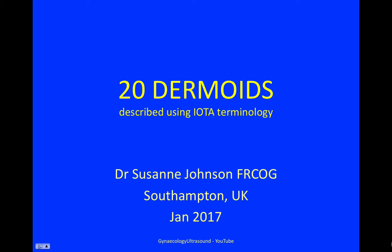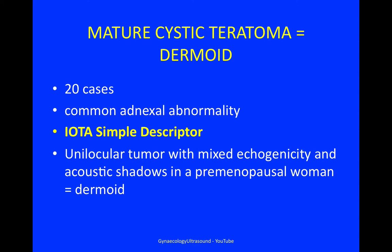This is a video of 20 dermoids described using IOTA terminology. My name is Dr Johnson and I'm a gynaecologist from Southampton. A dermoid is also known as a mature cystic teratoma — the two terms are interchangeable. I'm going to show you 20 cases of this common adnexal abnormality. They fit the term of IOTA simple descriptor, and you will find more definitions about IOTA on the IOTA playlist.